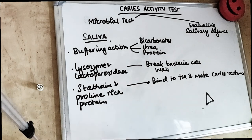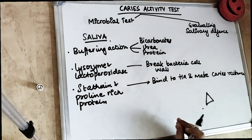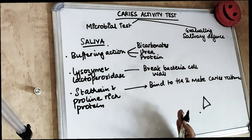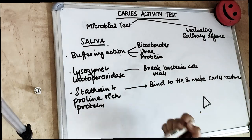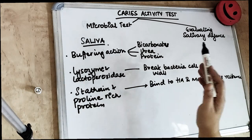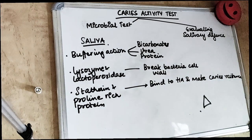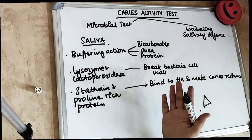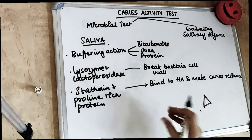Before starting with the caries activity test, let's read a little bit about saliva so that you understand the test better. Saliva plays an important role in stopping caries. There are certain actions of saliva — certain compounds present in it, for example the buffering action, which is due to bicarbonates, urea, and proteins present in the saliva. These bicarbonates dilute and buffer the acid.